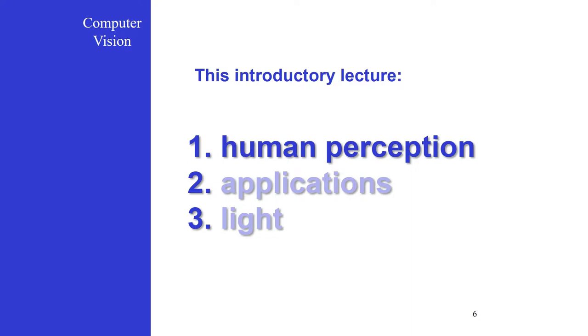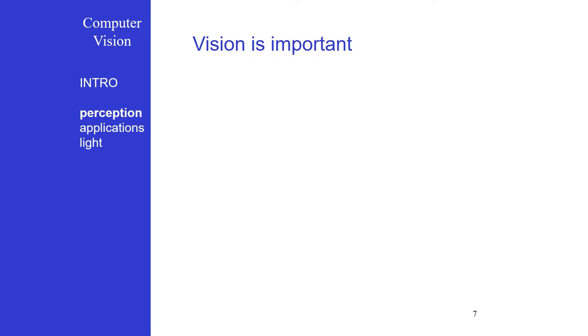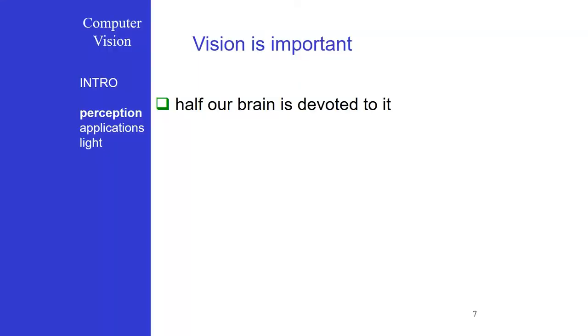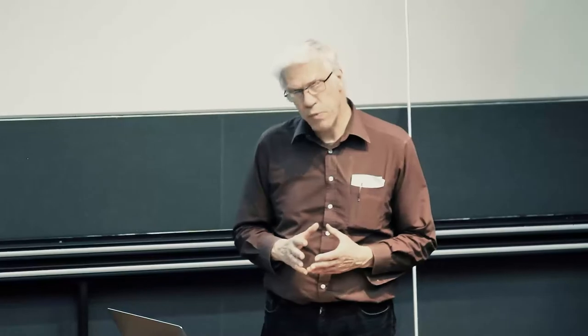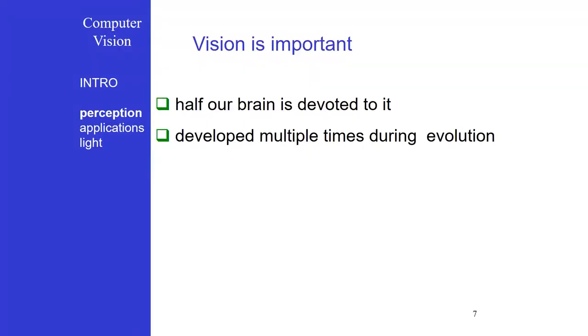So then we can start with the first part: human perception. If you look at nature, you see that vision is one of these very important sensors. Looking in particular at humans, you will see that almost half our brains, almost half our cells in the brain, the neurons, are dealing with vision one way or another. So that's already a sign of how important vision is for people.